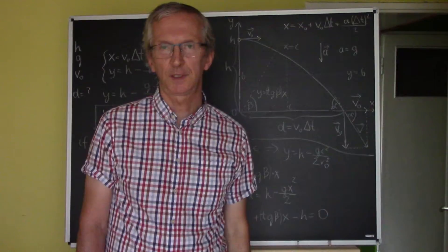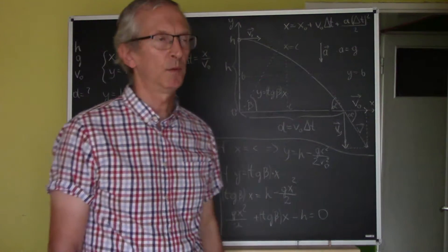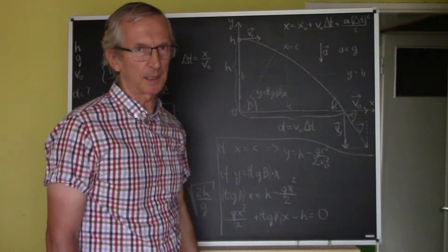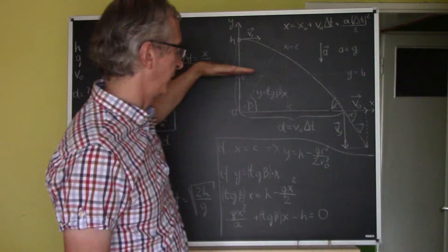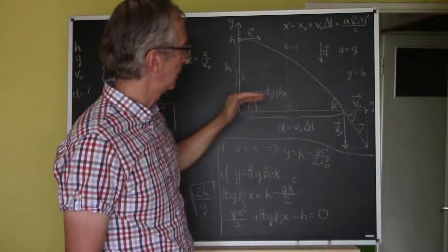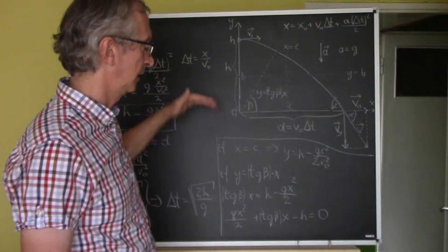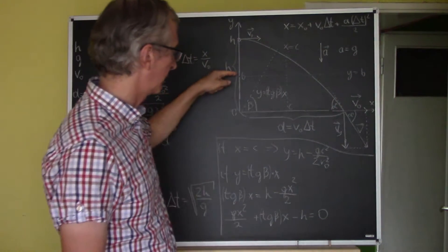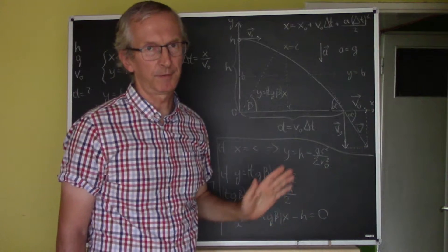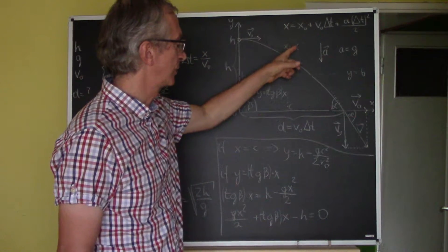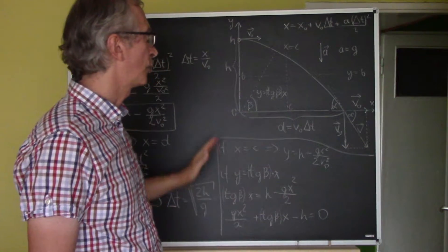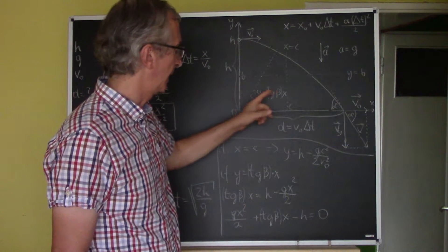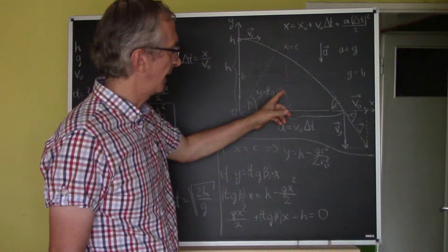In this task we want to know where the thrown object will hit the obstacle. This obstacle can be a horizontal platform, a vertical wall, or a slope. The equation of a platform is Y equals B. The equation of a vertical wall is X equals C. The equation of a slope is Y equals tangent beta — where beta is this angle — times X.